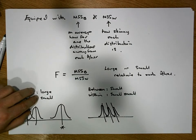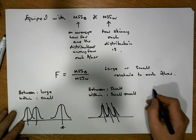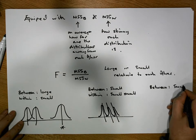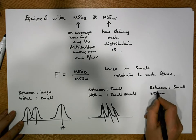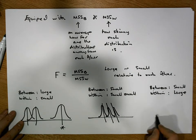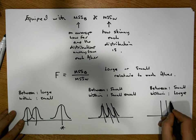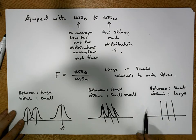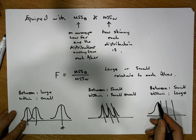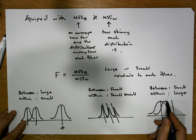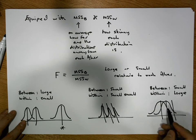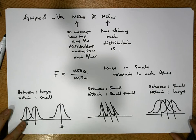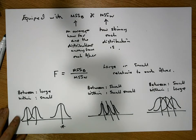Other scenarios include large between and large within, or small between and large within. In the small-between, large-within case, the distributions are close together and their average variance within is quite large, meaning they share lots of area. This is evidence to suggest that there's no difference between the groups.